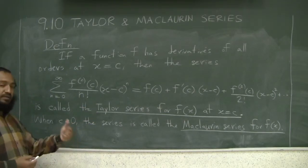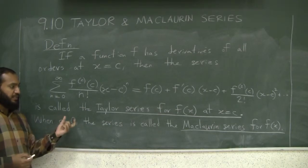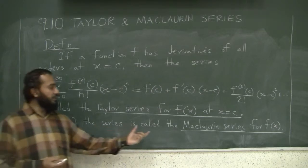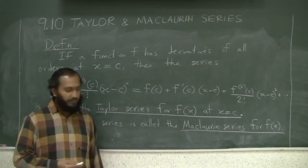Just like when we did Taylor polynomials, the Maclaurin polynomial was the special case when c equals 0. So when c equals 0, we call it the Maclaurin series for f of x.